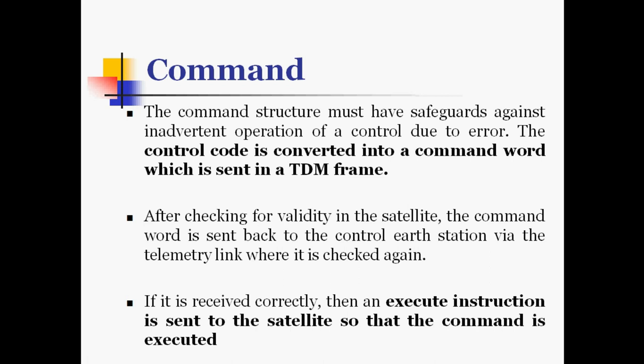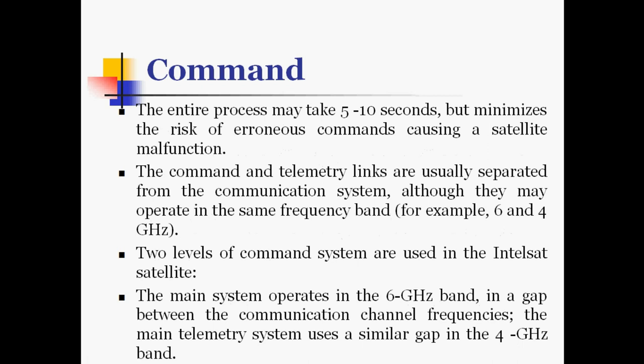After checking for validity in the satellite, the command word is sent back to the control earth station via the telemetry link where it is checked again. If it is received correctly, then an execute instruction is sent to the satellite so that the command is executed. The entire process may take 5 to 10 seconds, but it minimizes the risk of erroneous commands causing a satellite malfunction. The command and telemetry links are usually separated from the communication systems.